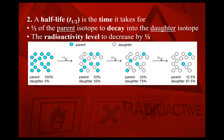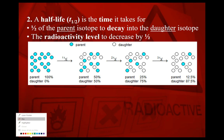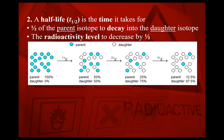In this diagram we have 16 nuclei. You're starting off with 16 parent nuclei and zero of the daughter isotope. If you go through one half-life — one T½ — then you'd have one half of the parent isotopes remaining, which is eight. But where did the other eight parent isotopes go? They decayed into the daughter isotope, so now you have eight of the daughter isotope.